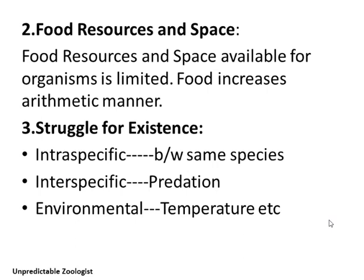Second postulate: food resources and space available for organisms are limited. Food increases in arithmetic manner — that is, 2 to 3, 3 to 4, 4 to 5 — this kind of increase. But the organism population is very much increased in geometric progression. Because the organism population grows very fast and food and space are limited.